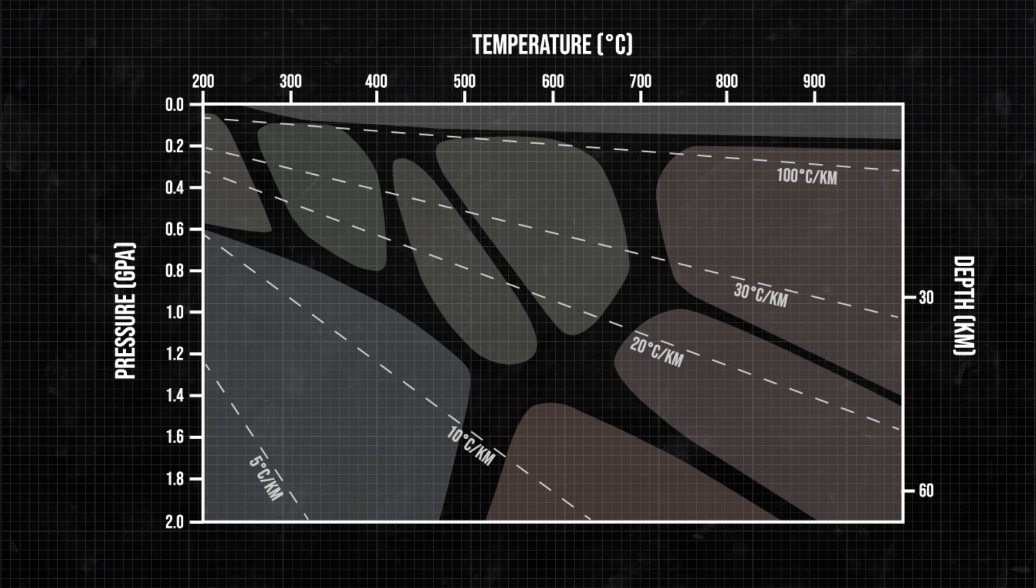The average geothermal gradient in the continental crust is about 25 degrees centigrade per kilometer. And gradients that are much higher or lower than this tell you that some interesting geology is happening.